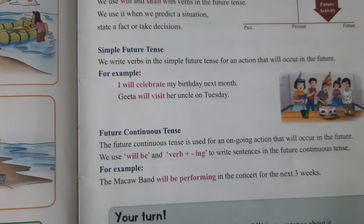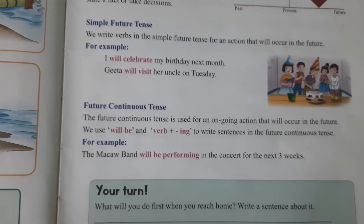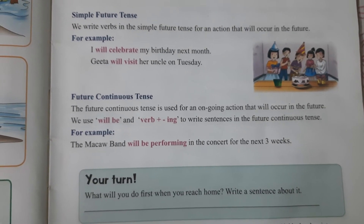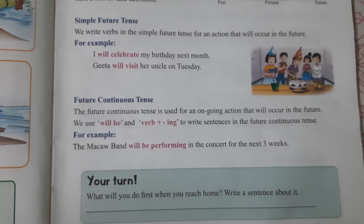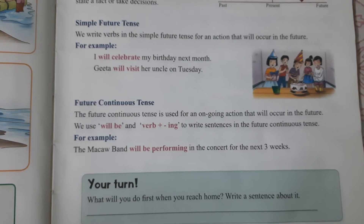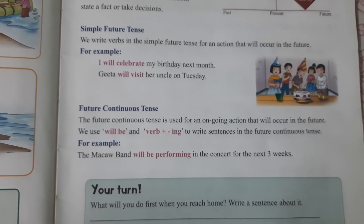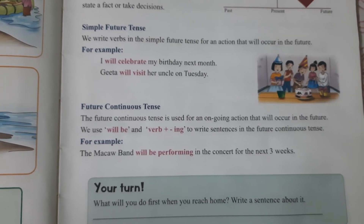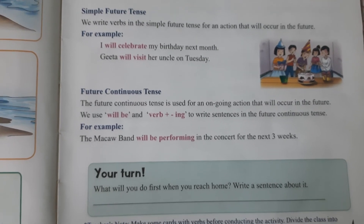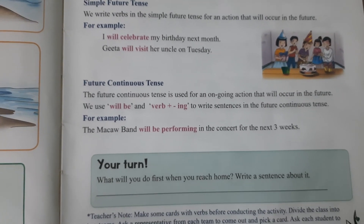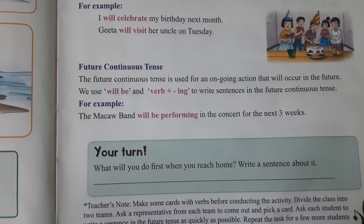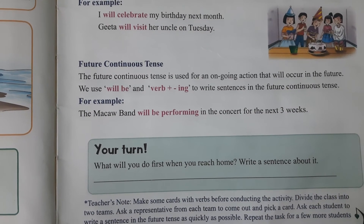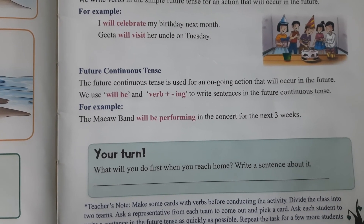The future continuous tense is used for an ongoing action that will occur in the future. We use 'will be' and verb plus '-ing' to write sentences in the future continuous tense.